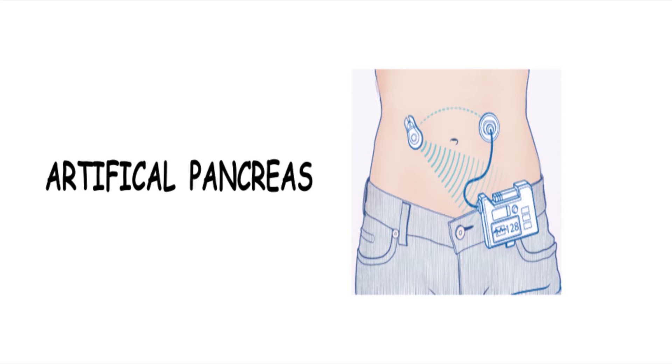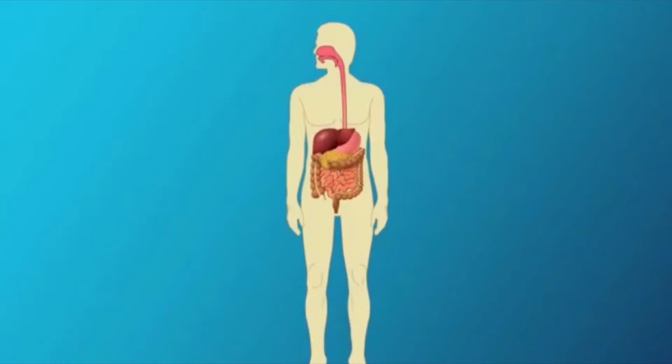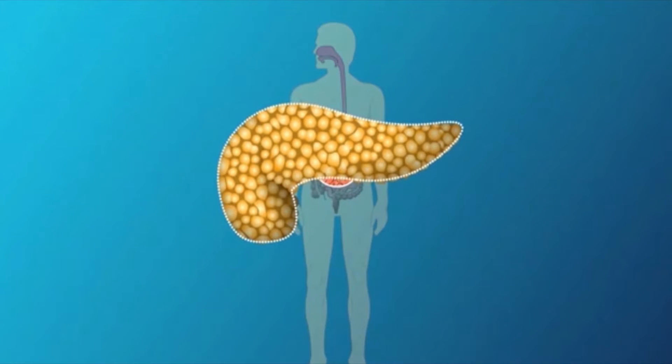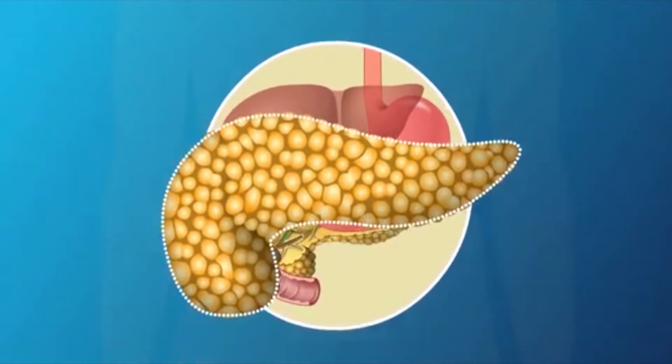Before going into the topic, it is essential to understand the working of a pancreas. Pancreas is a gland located in the abdomen just behind the stomach. It is about 6 to 8 inches long.